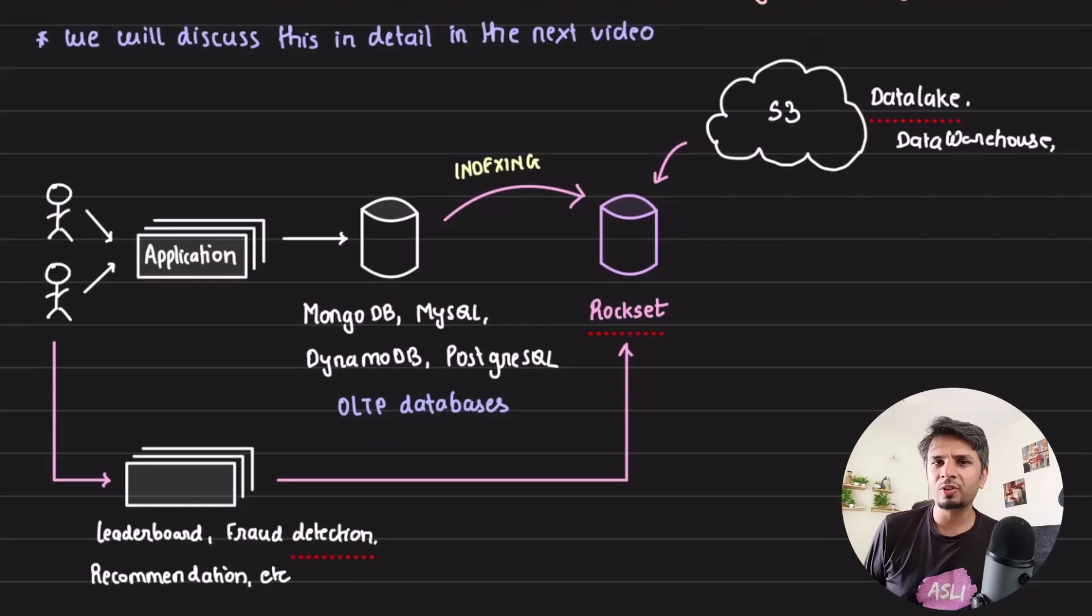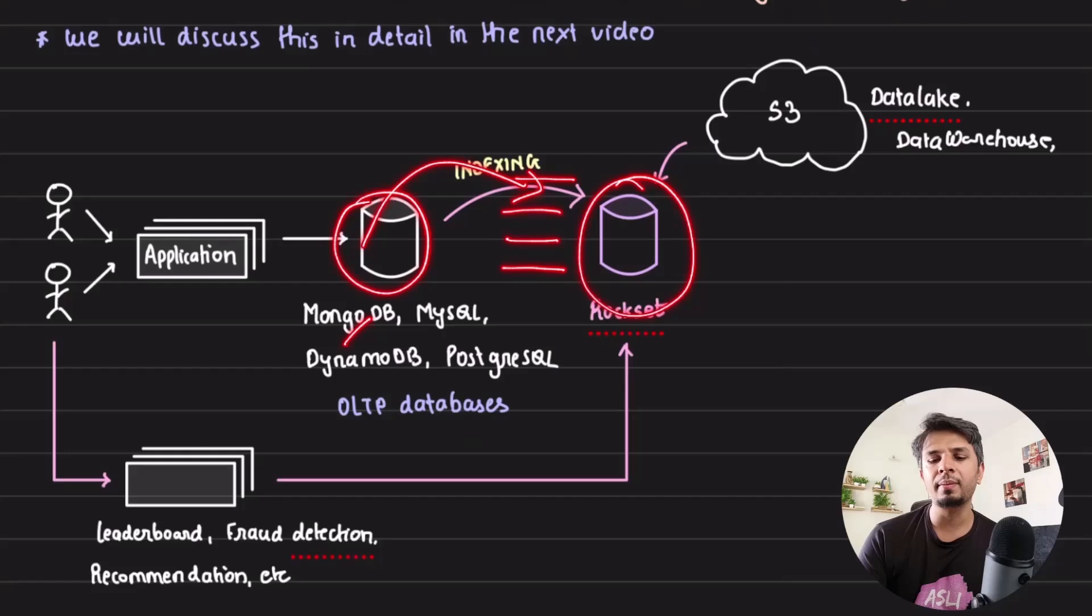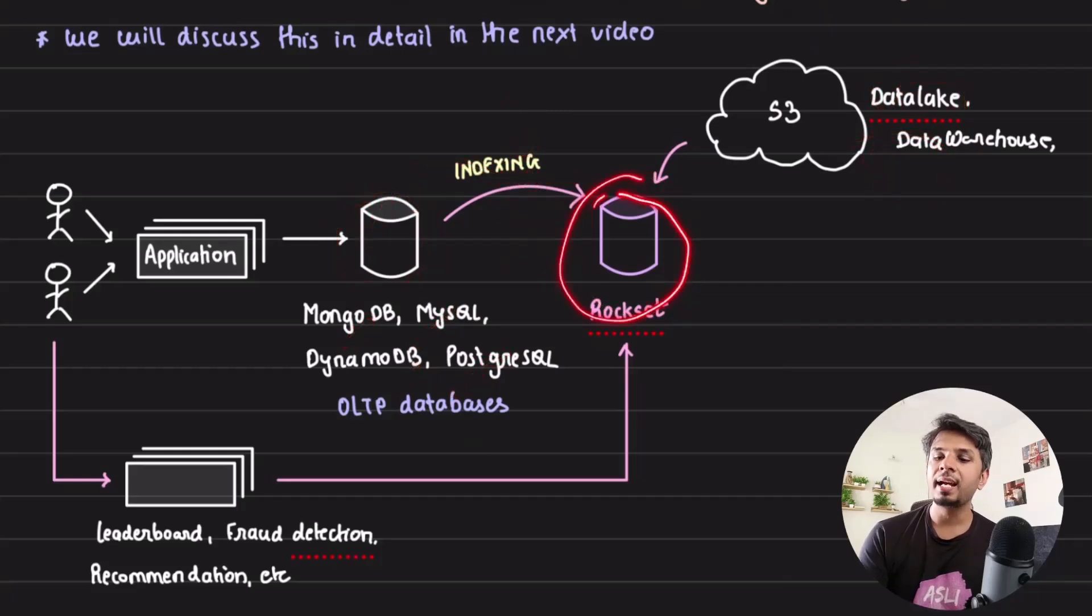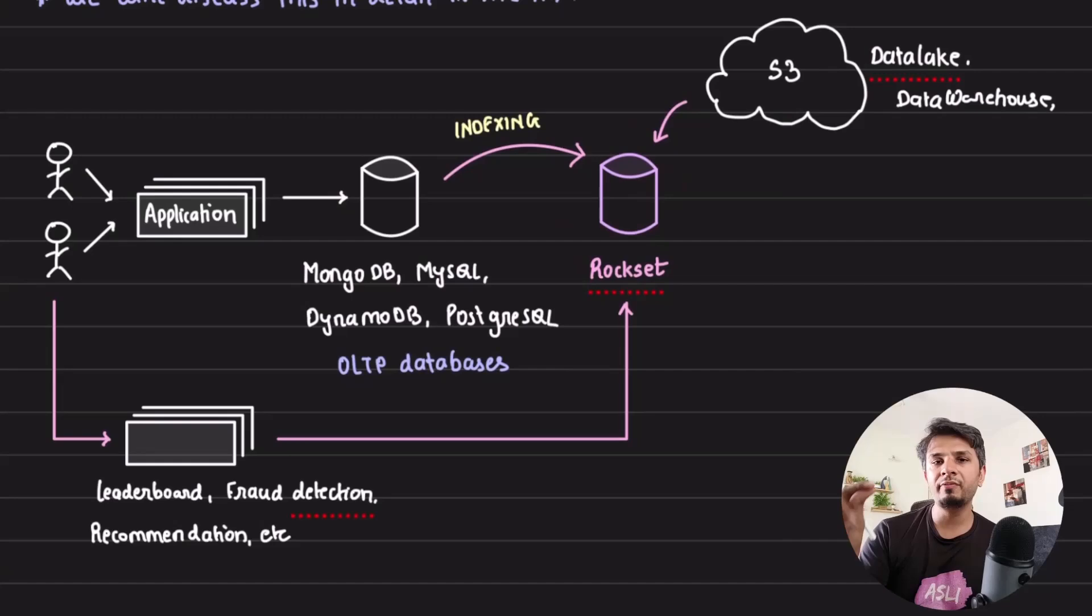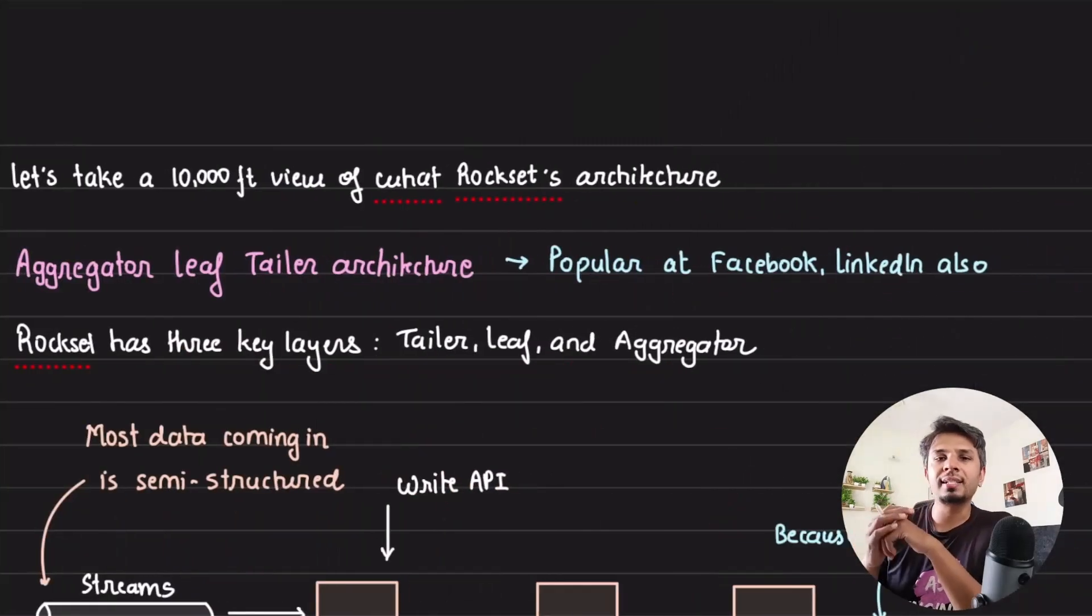Now, before we go into the architecture of Rockset, let's take a step back to understand where it fits into your scheme of things. Given that Rockset is a managed offering, it has a lot of native integrations to pull data from your transactional systems like MongoDB, MySQL, DynamoDB, and Postgres. It can pull data from streams and even from your data lakes and data warehouses. Once the data is pulled into Rockset, it's now available to be queried with very low latency, and that would power your use cases like leaderboards, recommendations, personalizations, and whatnot. Now, let's go deeper into Rockset's architecture.